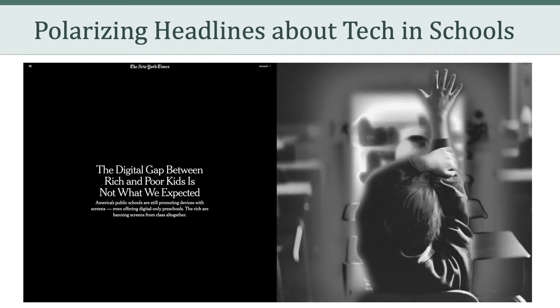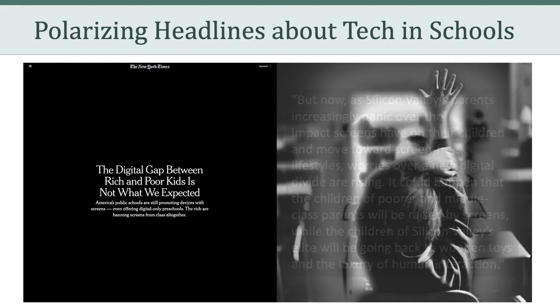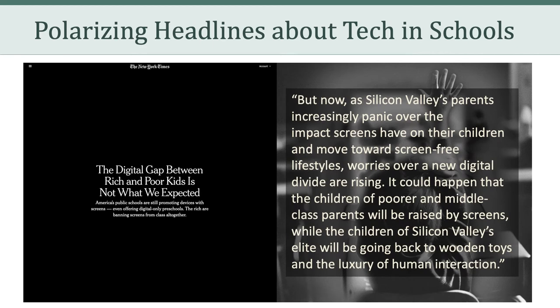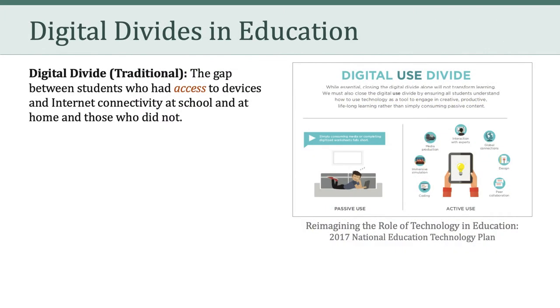Take a look at this October 2018 story in the New York Times titled 'The Digital Gap Between Rich and Poor Kids is Not What We Expected.' The subtitle reads: 'America's Public Schools Are Still Promoting Devices with Screens — even offering digital-only preschools — the rich are banning screens from class altogether.' A quote from that article: 'As Silicon Valley's parents increasingly panic over the impact screens have on their children and move towards screen-free lifestyles, worries over a new digital divide are rising. It could happen that the children of poorer and middle-class parents will be raised by screens, while the children of Silicon Valley's elite will be going back to wooden toys and the luxury of human interaction.'